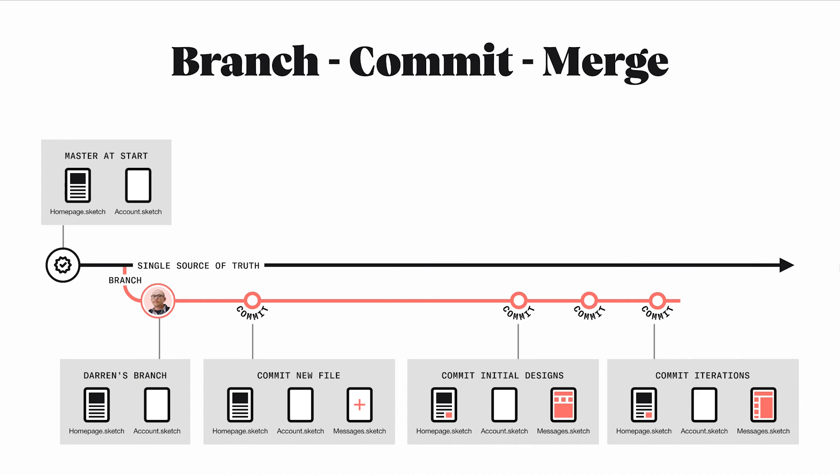When his team is ready to ship this new feature, he will merge his branch back into master. Now the master files are updated with the latest work and everyone has access to see the updates. And that's the general Abstract workflow, which we'll be learning more about in this video series. I hope you'll stick around.